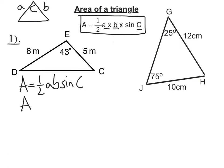Remember, it's given to you in your formula booklet. Then put our values in. So, a half times 8 times 5 times sine of the angle between them is 43.